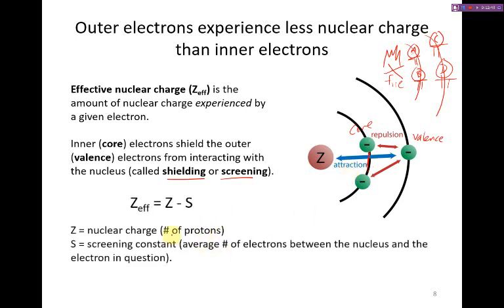We can quantify this. A good approximation of the effective nuclear charge is equal to the actual nuclear charge, number of protons, minus a screening constant. And you can think of this as the average number of electrons between the nucleus and the electron in question. So in this case, let's say that we have, if there are five protons in the nucleus, if we have two core electrons and one valence electron, what's the Z effective for each?